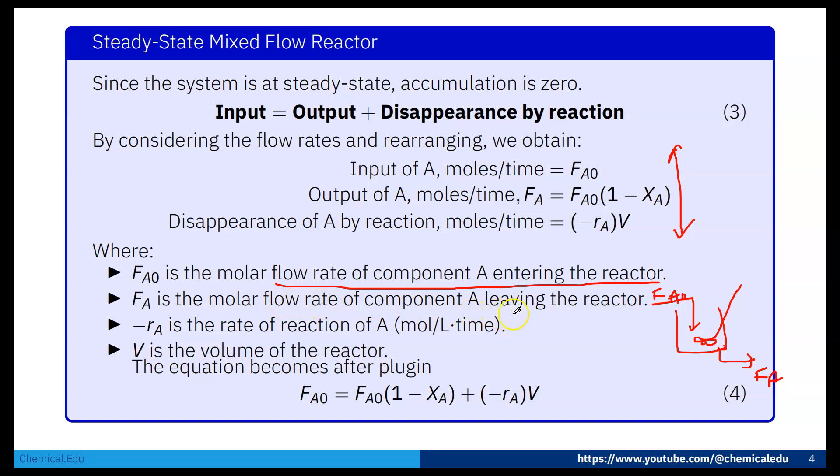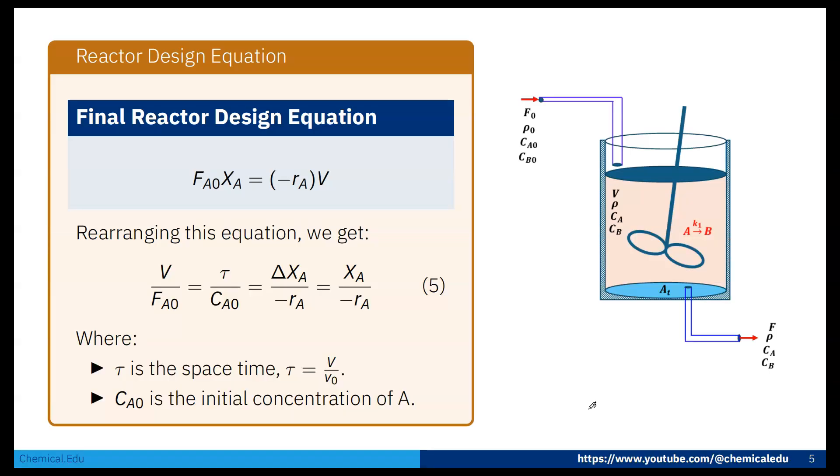FA is the molar flow rate of component A leaving the reactor. -rA is the rate of reaction of A in moles per liter time. V is the volume of the reactor. The equation becomes after plugging: FA0 equals FA0(1 - XA) plus rA times V. Remember, this is the steady-state case, so accumulation is zero.